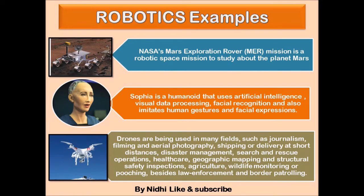Let's look at some examples of robotics. The first example is NASA's Mars Exploration Rover — a robotic space mission used to study the planet Mars. This rover collects samples and images from the Mars surface and sends them to Earth. The second example is Sophia, a humanoid that uses artificial intelligence, visual data processing, and can imitate human gestures and facial expressions.